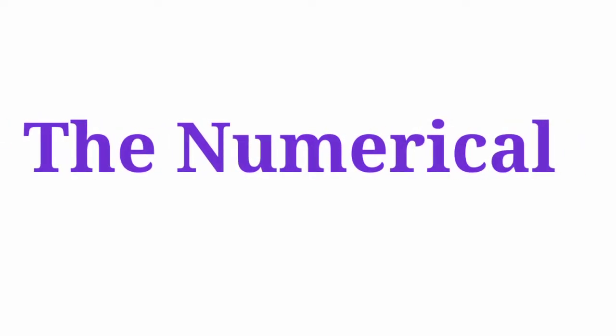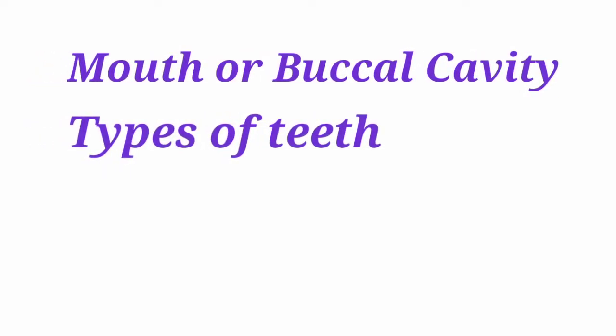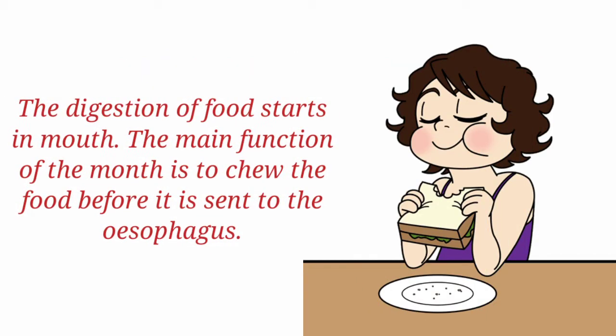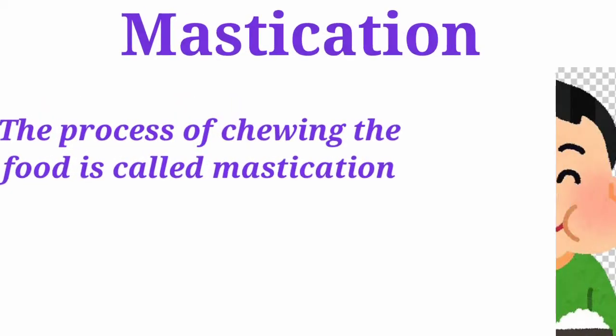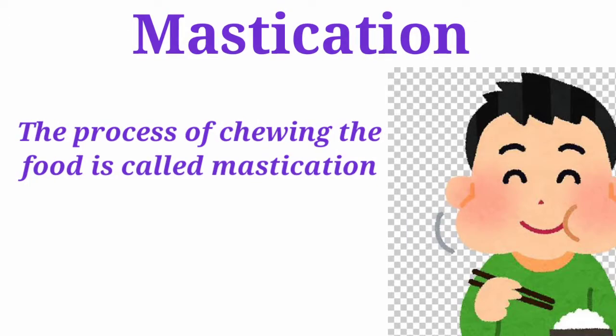Hello students, and welcome to my channel. In this video we discuss the mouth or buccal cavity, all four kinds of teeth, and the tongue. The digestion of food starts in the mouth. The main function of the mouth is to chew the food before it is sent to the esophagus. The process of chewing food is called mastication.